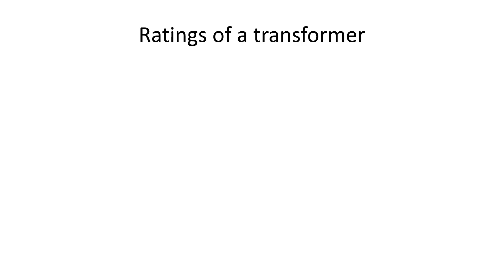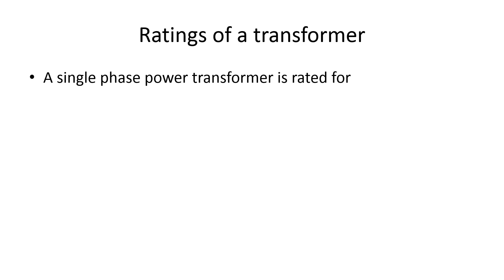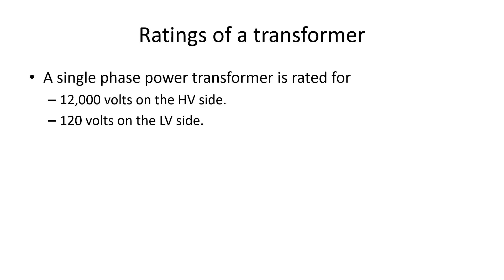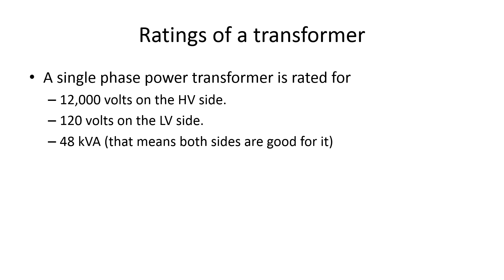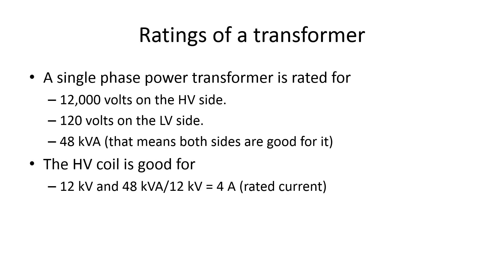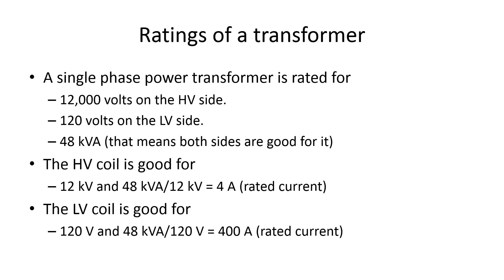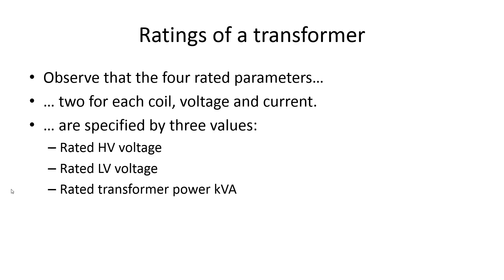Let's consider a specific single-phase transformer. It is rated for 12 kV on the high side and 120 V on the low side, and can transfer 48 kVA — its rated power. The rated current of the primary is 4 amperes and the rated current of the secondary is 400 amperes. Notice that we used only three parameters — two voltages and one power — to compute all the others.